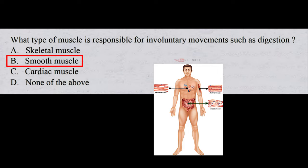Smooth muscle is one of the three major types of muscle tissue in the body. It lines hollow internal organs such as the stomach and intestines, as well as blood vessels.